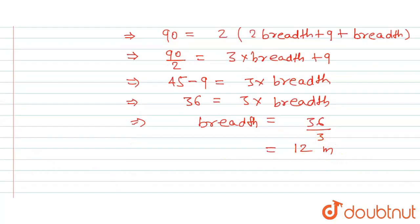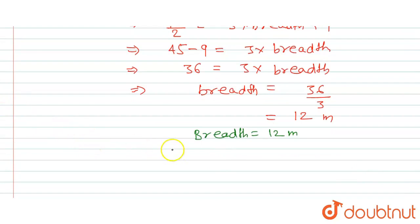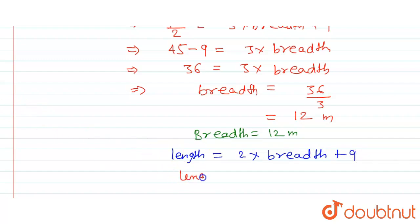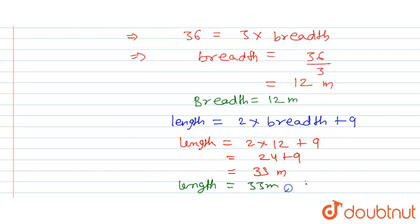Now we substitute breadth = 12 into the length formula: length equals 2 times breadth plus 9, which is 2 times 12 plus 9, that is 24 plus 9, which equals 33. So the length is 33 meters and the breadth is 12 meters. This is the answer for this question.